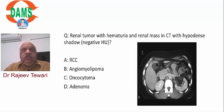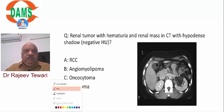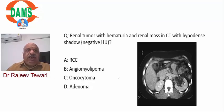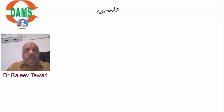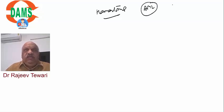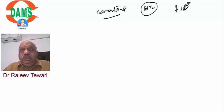Renal tumor with hematuria and a renal mass on CT showing a hypodense shadow with negative Hounsfield units - negative Hounsfield means fat. This is angiomyolipoma (AML). All three tissue components are present: angio (blood vessels), myo (smooth muscle), and lipoma (fat). These tumors are more common in males and in patients above 40 years.